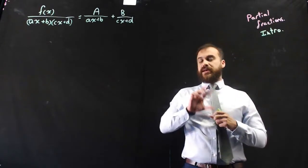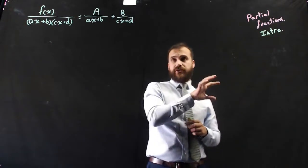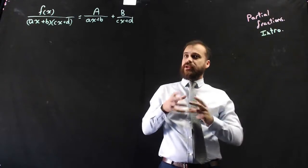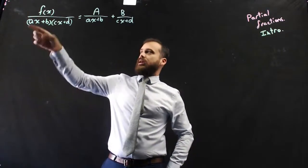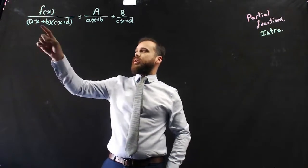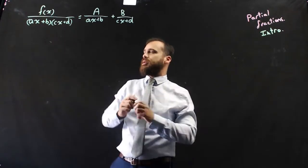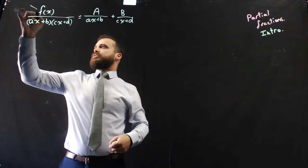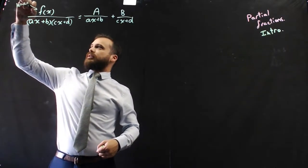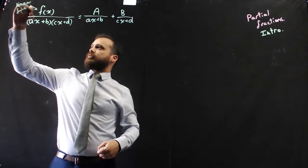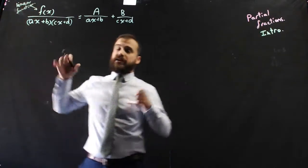All right, so we're going to do some anti-differentiation with partial fractions. First of all, you need to know a little bit. Now, if you were going to integrate something like this: f(x) over (ax + b)(cx + d), that's where f(x) is a linear function, so something like mx + c.